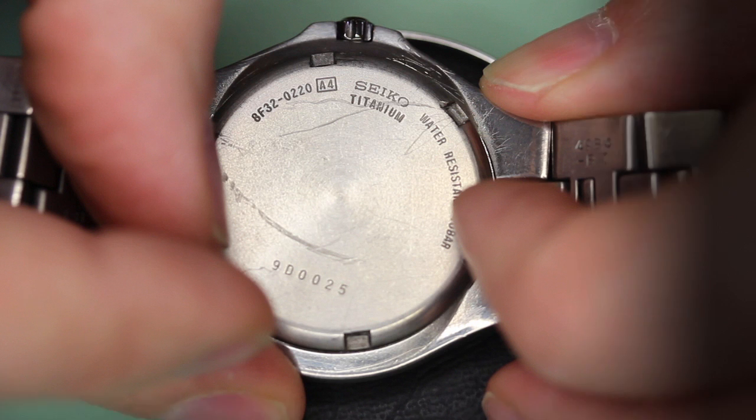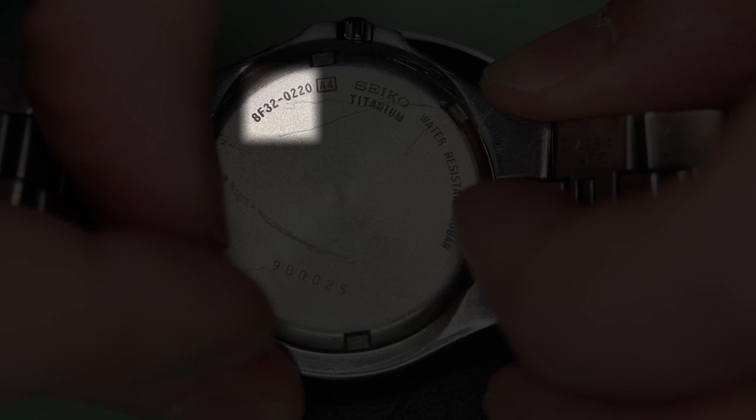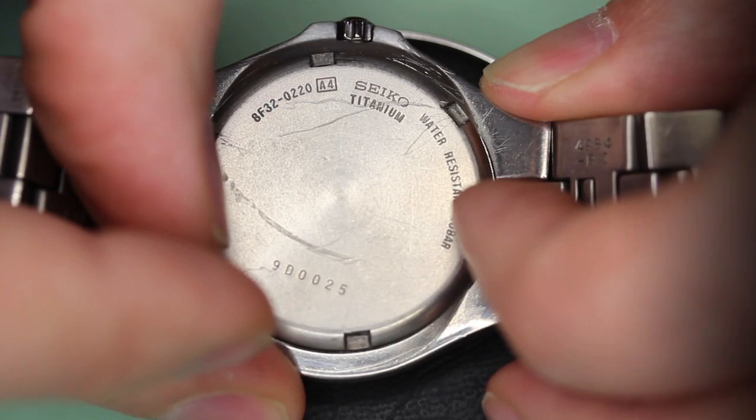To order the new glass, you're going to need these eight characters that are on the watch back for a Seiko watch. There's always four characters with a dash and another four characters. The first four characters are the movement number, and the last four characters represent the case or model number. So those eight characters are required when you're ordering the new glass.